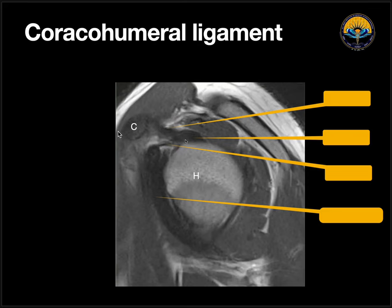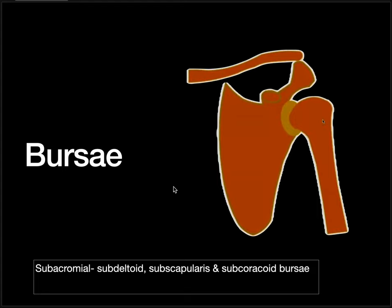So to summarize: the superior labrum will have the superior glenohumeral ligament; the inferior labrum will have the inferior glenohumeral ligament; the middle glenohumeral ligament is associated with the anterior labrum. In the rotator interval, we have the coracohumeral ligament, supraspinatus, infraspinatus, teres minor, acromion, coracoid, and humerus. We can see the superior glenohumeral ligament and the subscapularis ligament.